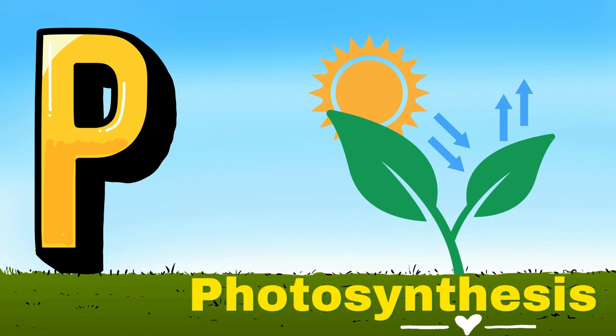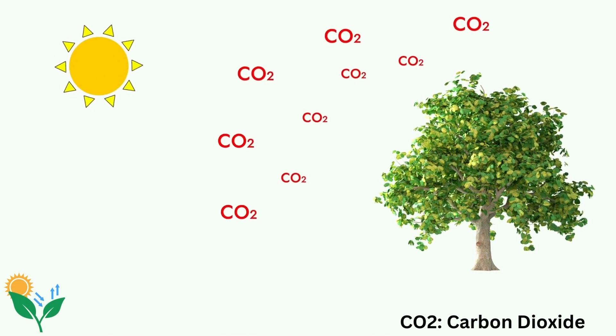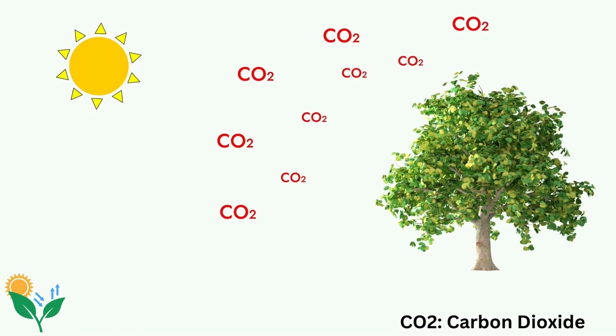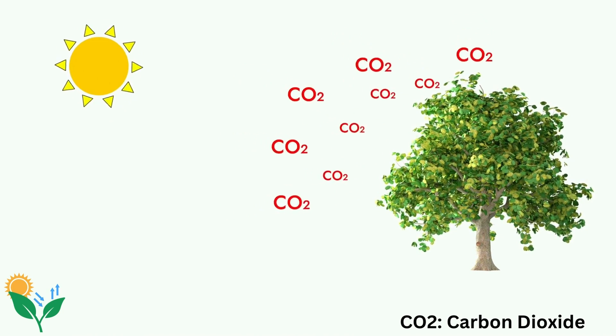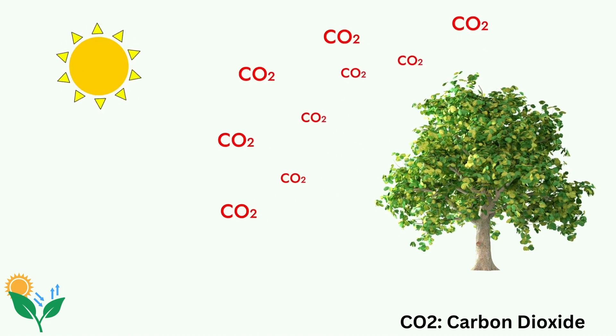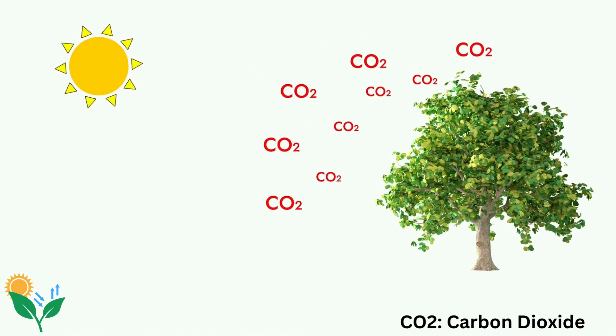P for Photosynthesis. Photosynthesis is a magical process plants do, they use sunlight, water, and air to grow and make food too. With the help of a special green pigment called chlorophyll, they convert sunlight into energy, it's nature's own skill.